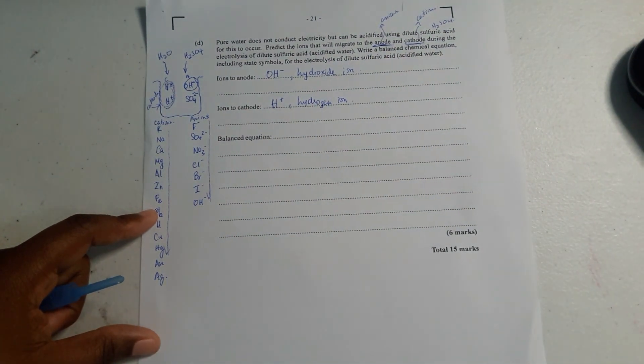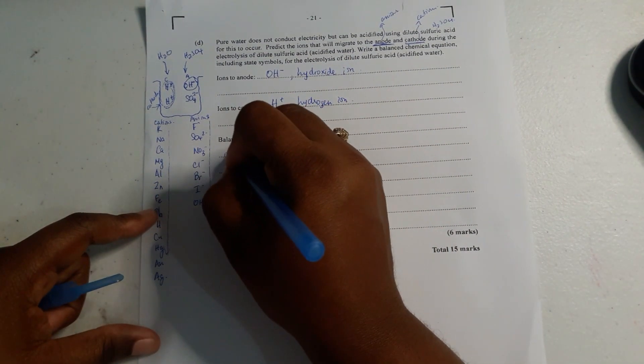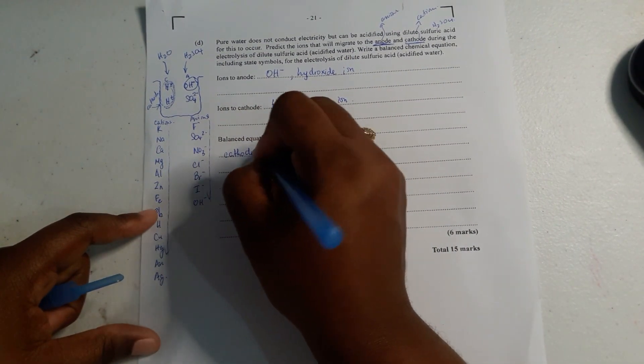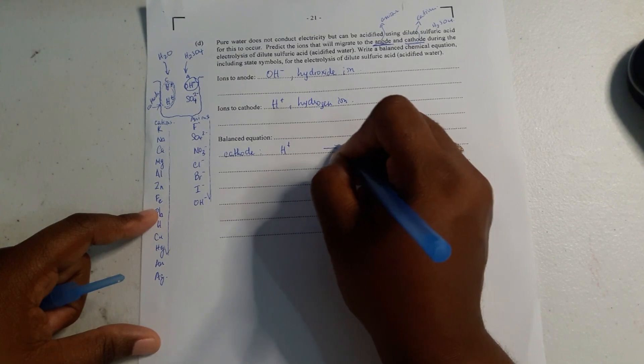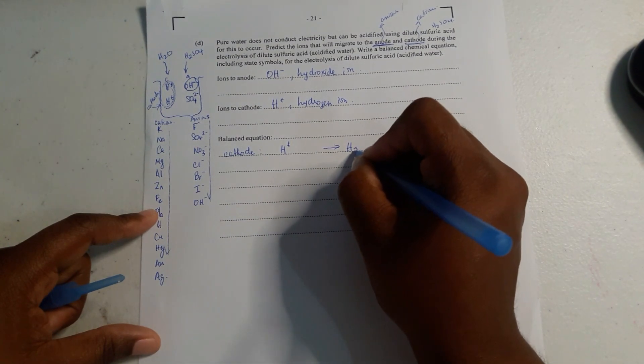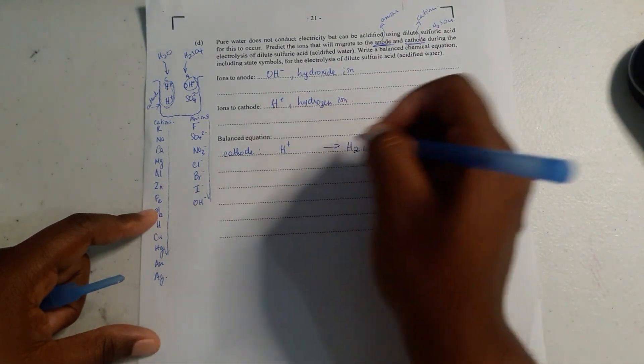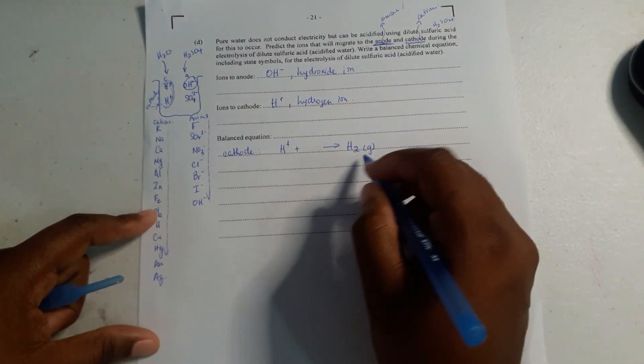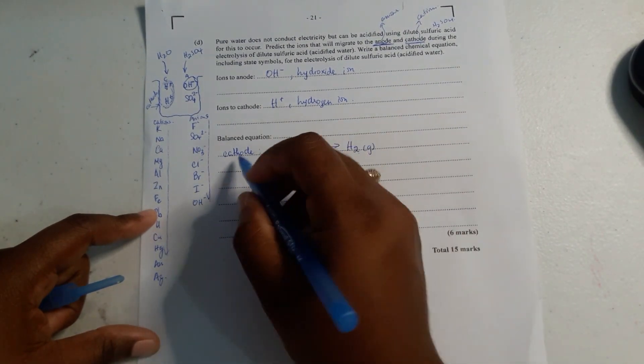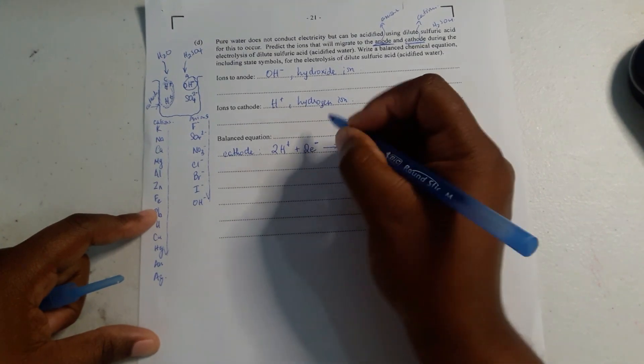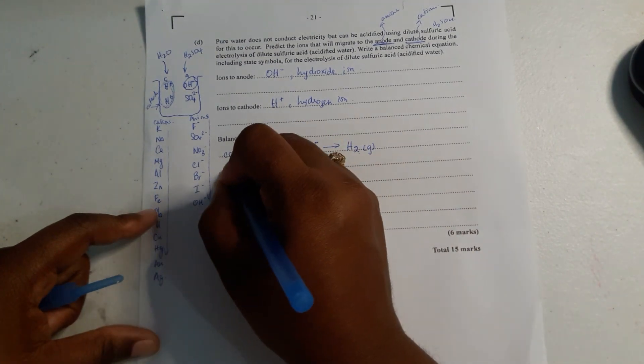So now we're going to write a balanced equation, but first we have to write the half equation. Writing the half equation at the cathode, we know that the hydrogen ions would give off H2 gas, because it's hydrogen ions in solution coming off as a gas. And once you have a plus here, how many atoms of hydrogen do you have? It's two. And reduction happens at the cathode, so we know reduction is a gain of electrons, so this is perfectly correct.